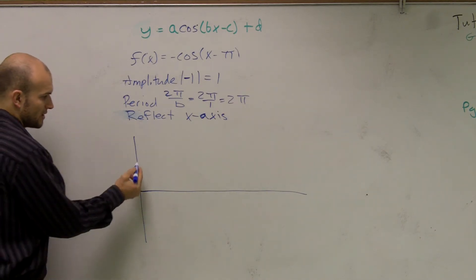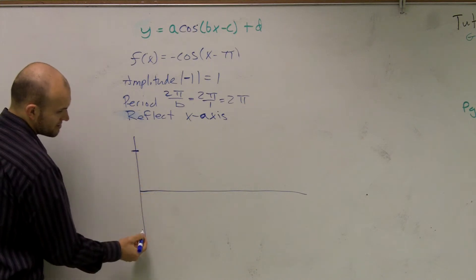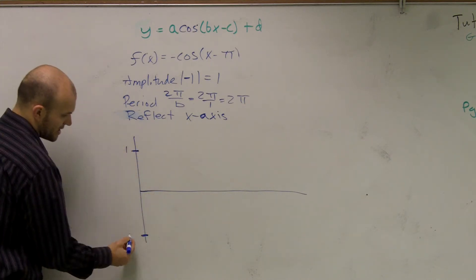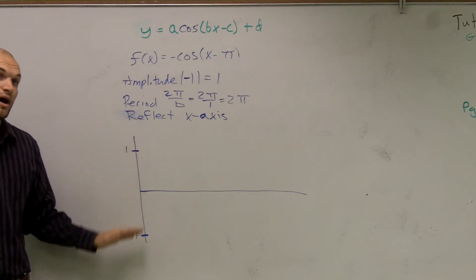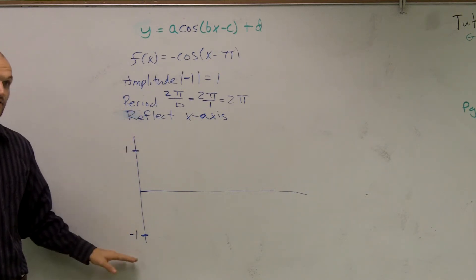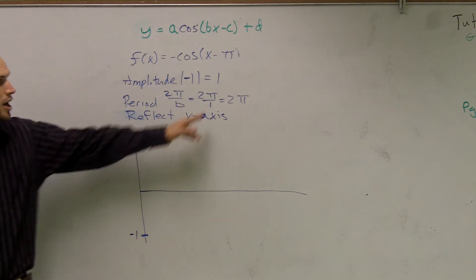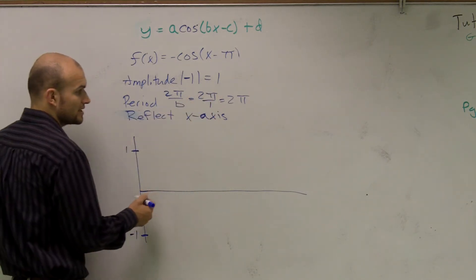You find our amplitude, which is up to 1 to negative 1, right? Amplitude is the distance from your x-axis, how high your graph is going to go up, and then how far your graph is going to go down from the x-axis. Our period is how long it takes us to complete one cycle.